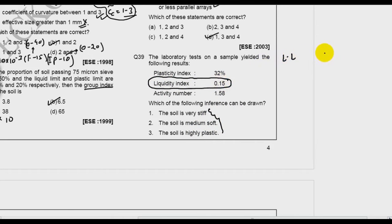So liquidity index and condition. If liquidity index lies between 1 to 0.75, the soil is soft. If liquidity index lies between 0.75 to 0.5, the soil is firm. If liquidity index lies between 0.5 to 0.25, then soil is stiff. And if liquidity index lies between 0.25 to 0, then soil is very stiff. And if liquidity index is less than 0, then soil is hard. This table you have to remember.